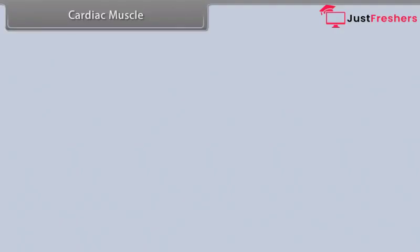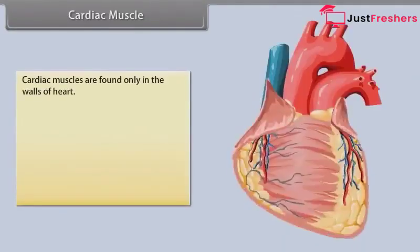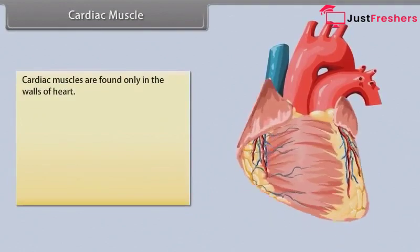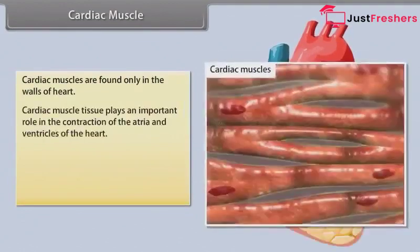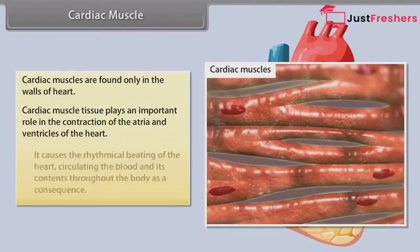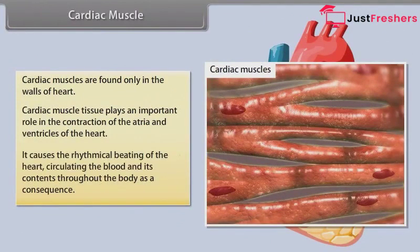Cardiac muscles are found only in the walls of the heart. Cardiac muscle tissue plays an important role in the contraction of the atria and ventricles of the heart. It causes the rhythmical beating of the heart, circulating the blood and its contents throughout the body.